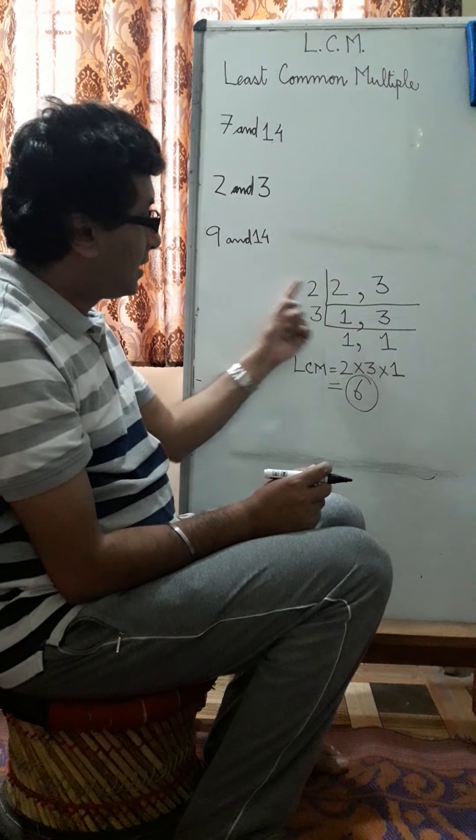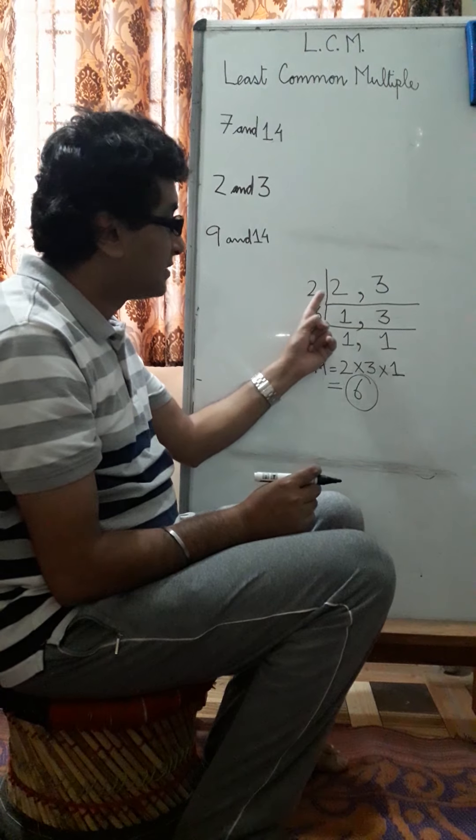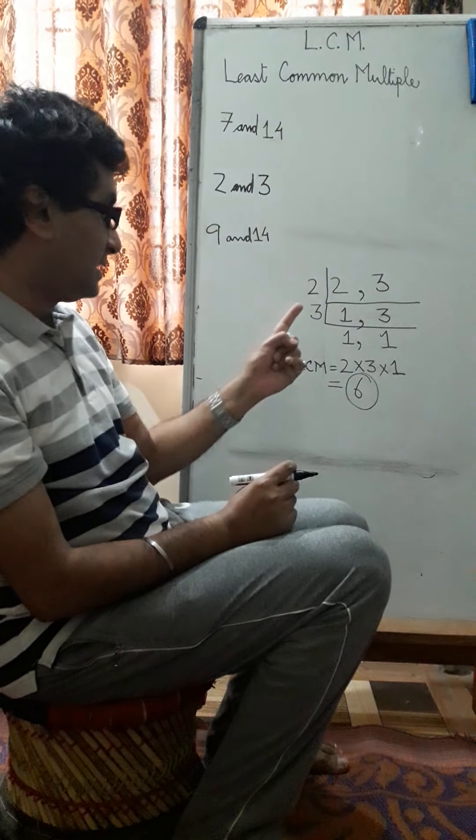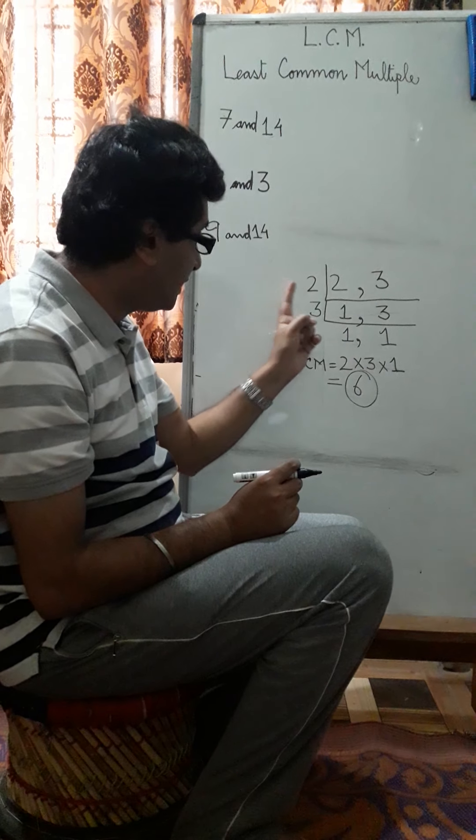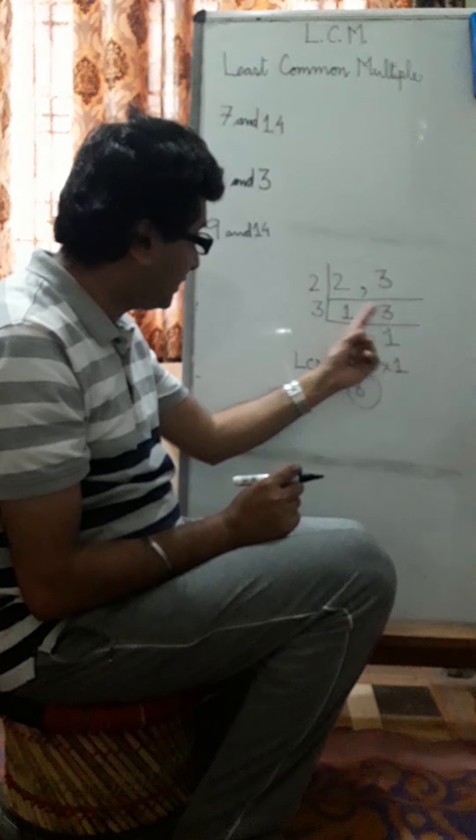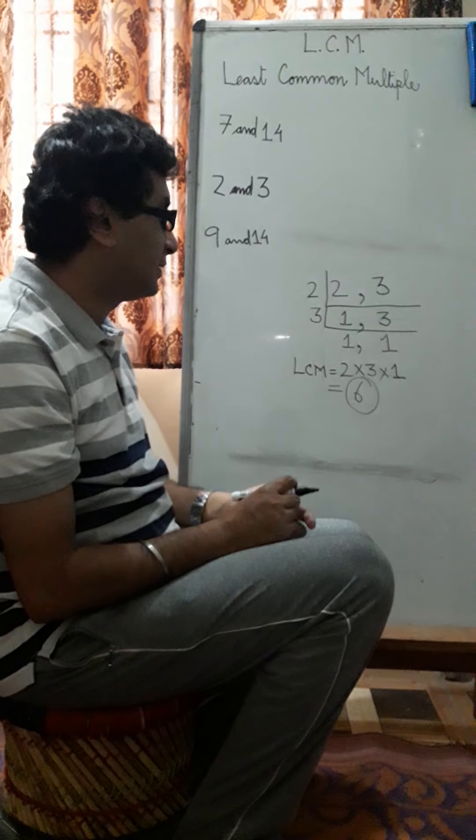So I repeat, take a prime number, try to divide any of the numbers with that prime number and divide it in such a way that no remainder is left. So 2 would divide 2 one time without leaving any remainder. 2 would not divide 3, but then 3 has to be carried down. So 3 will divide 3 and then you multiply everything.